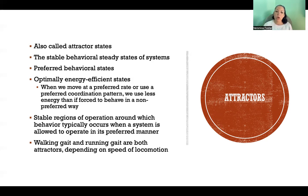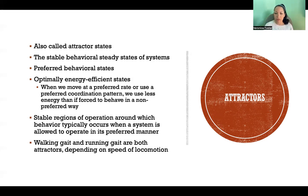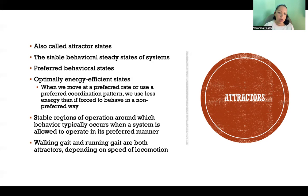If we try to force ourselves into a walking or running gait at the wrong speed, that is very energy inefficient. We naturally choose the most energy efficient state of locomotion based on our speed. When we're forced to walk faster than we want to, or forced to run slower than we want to, we are using more energy. It takes more energy per mile to run slower than you'd prefer to. Attractors are stable regions of operation around which behavior typically occurs when a system operates in its preferred manner.